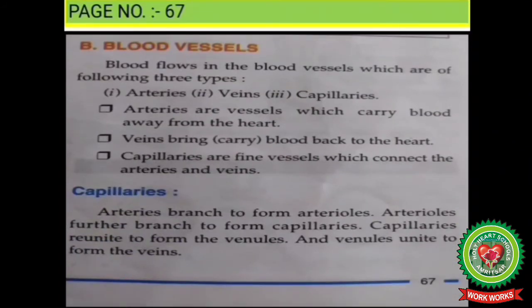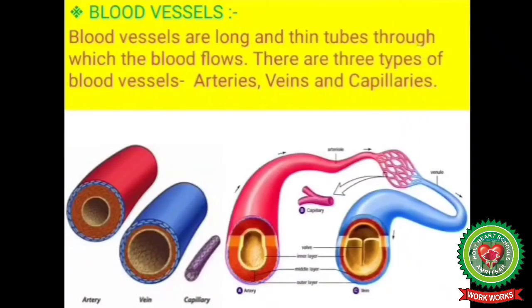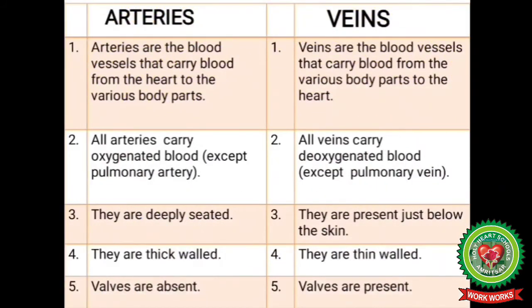Now open page number 67: blood vessels. Blood flows in blood vessels, which are long and thin tubes of three types: arteries, veins, and capillaries. Arteries are blood vessels that carry blood from the heart to the various body parts. Veins are blood vessels that carry blood from the various body parts back to the heart. All arteries carry oxygenated blood except the pulmonary artery; all veins carry deoxygenated blood except the pulmonary vein.